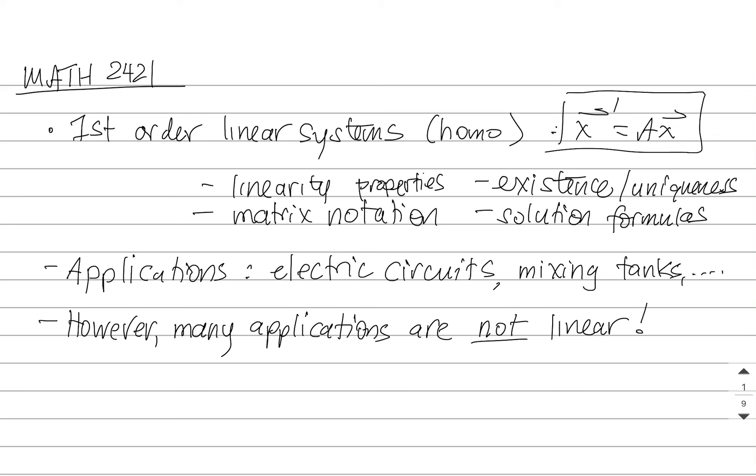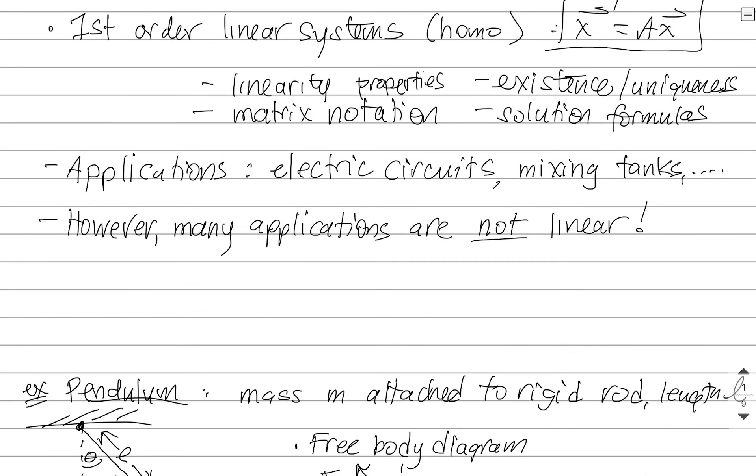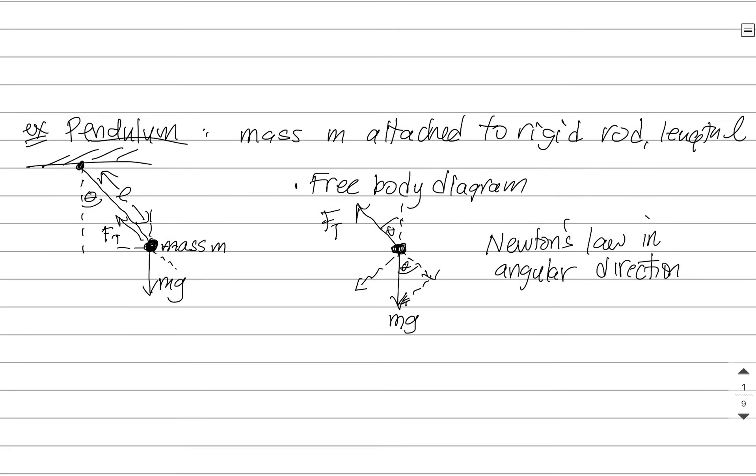We are also going to use them to help us study what are called non-linear systems. So as an application of something that is not linear, let's take a look at a pendulum. A pendulum is some mass that's attached to a rigid, inflexible rod, and then it swings back and forth. So it just follows some circular arc like this, swings back and forth,